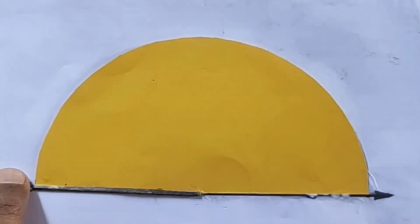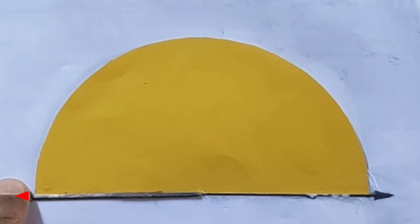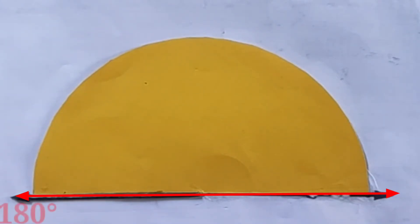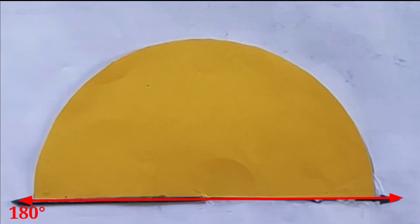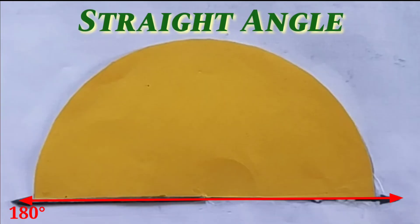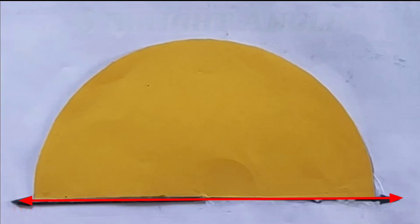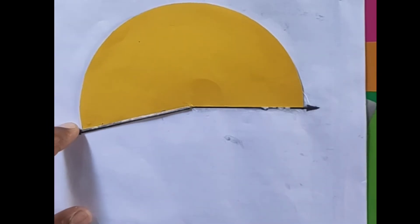When the two arrows form a straight line, that angle is 180 degrees. A 180-degree angle is called a straight angle.